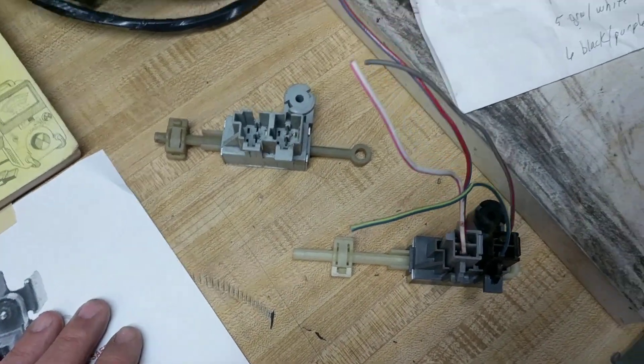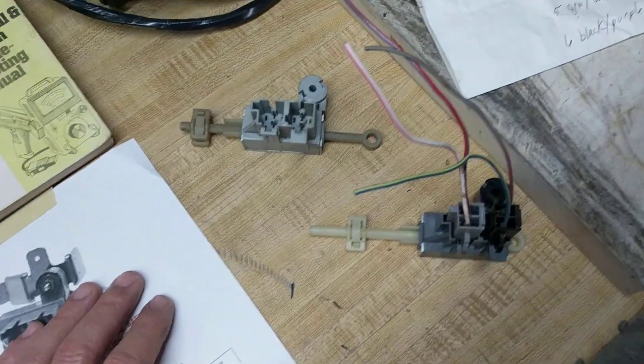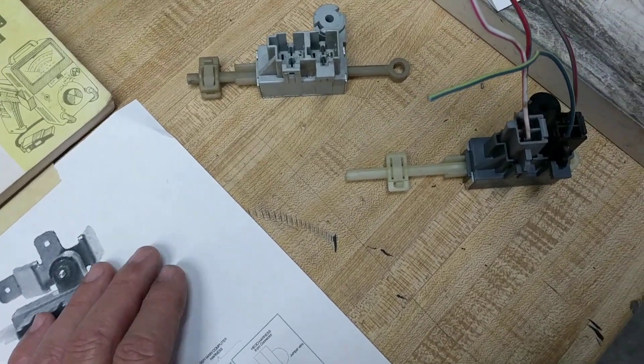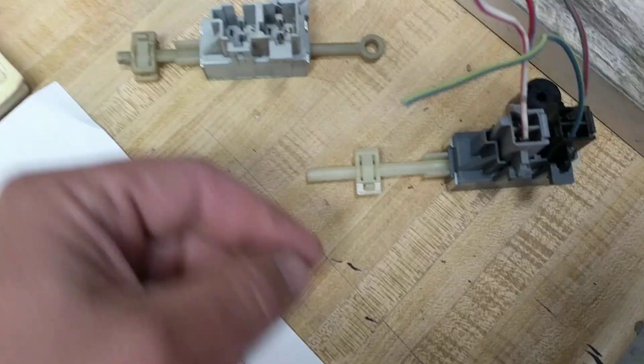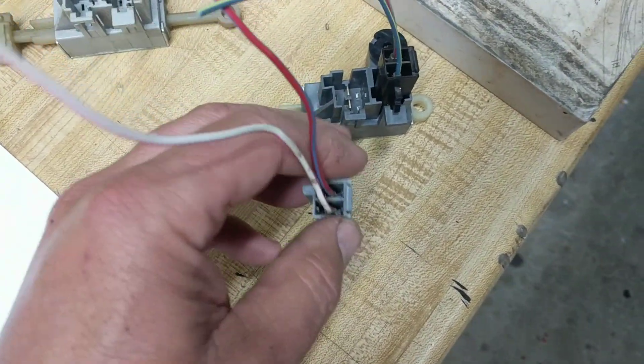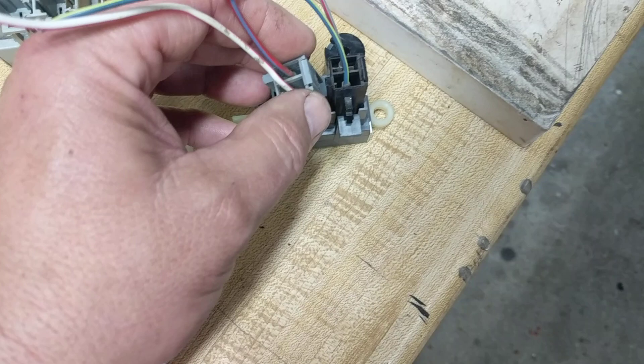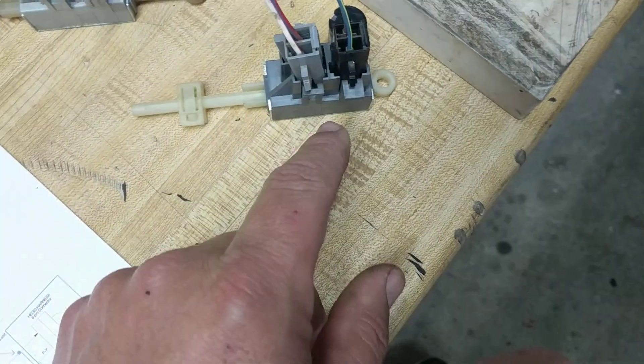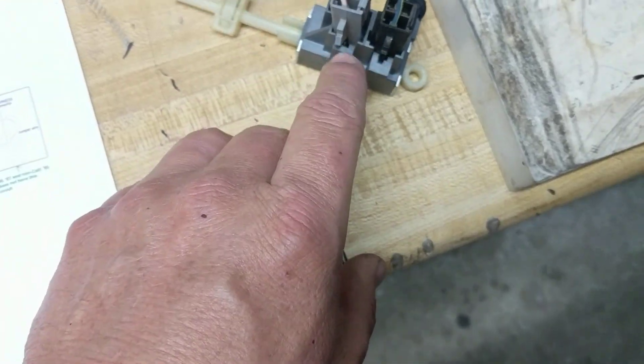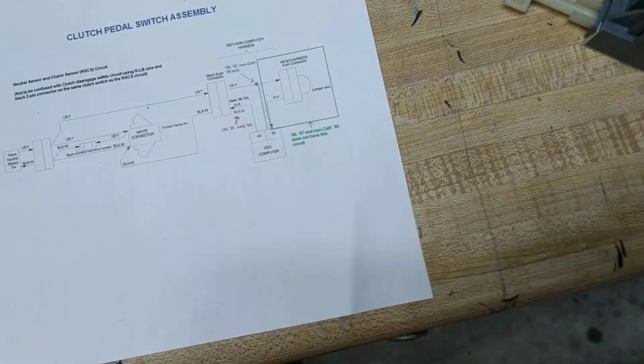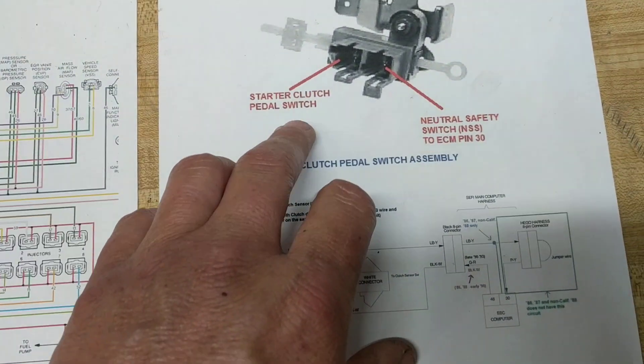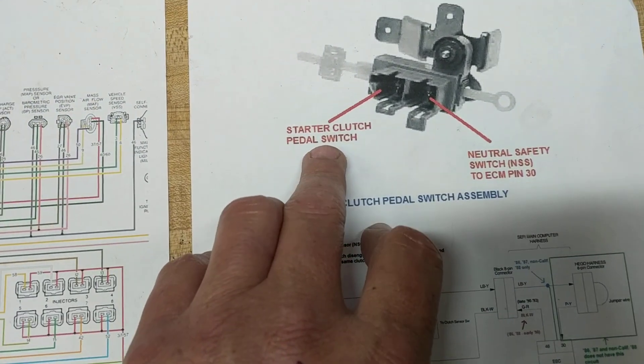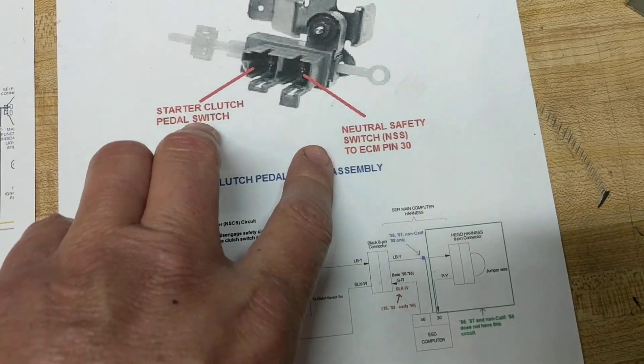And everything I saw when I was looking for clutch switch, it had like two connectors on there. I was like, that doesn't make any sense. So then I ordered one from LMR and it had two prongs in each socket. So until I started digging on this, I didn't know that there was like a starter clutch pedal switch and a neutral safety switch.